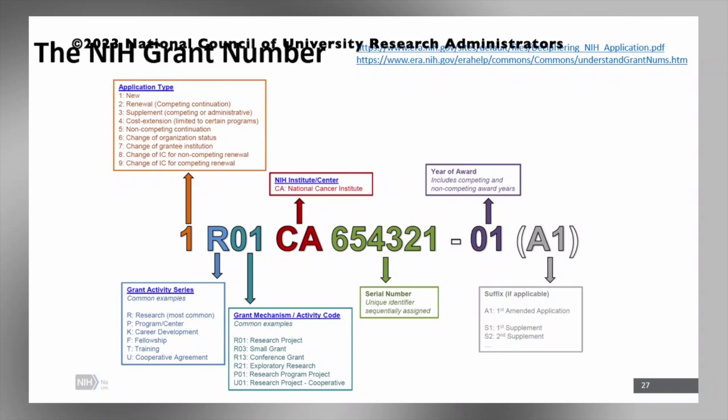Why don't we break it down? You can start with the prefix there, number one. That's going to represent the application type. So the most common types that you're going to see, especially for new applications, are going to be a type 1 or type 2 application.